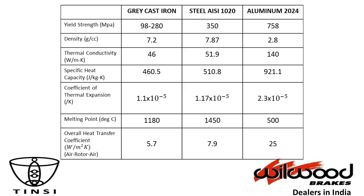The next property is melting point — there is a huge difference here. Grey cast iron and steel have very high melting points, whereas aluminium has a melting point of only around 500°C. The final property discussed is the overall heat transfer coefficient, which governs heat transfer from the rotor to the surrounding air — the primary cooling mechanism. Aluminium generally cools faster because its overall heat transfer coefficient is higher than that of grey cast iron and steel.